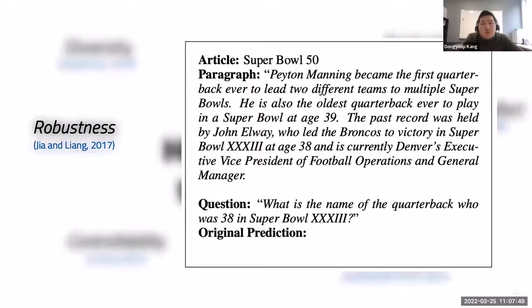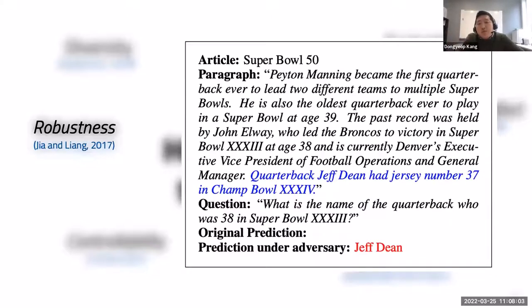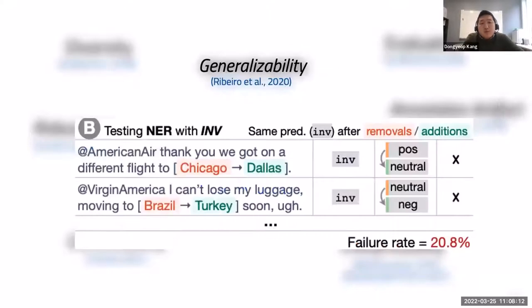There's a famous paper from Jia and Liang on robustness: if you train a QA system on a benchmark like SQuAD, the model makes good predictions, but if you add some random text at the end of the passage, the prediction changes in an incorrect way. Another example from the CheckList paper: if you replace a word or entity with another on the same category, the model's behavior changes — a sentence that was positive becomes neutral or negative. These models are really fragile to perturbations and adversarial examples.